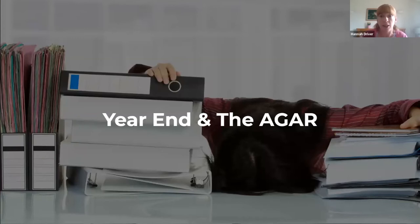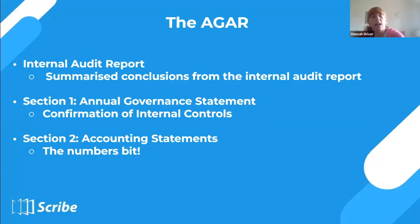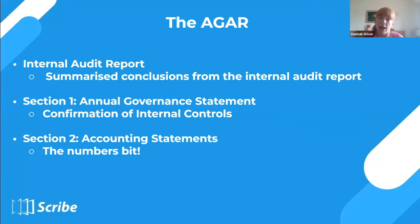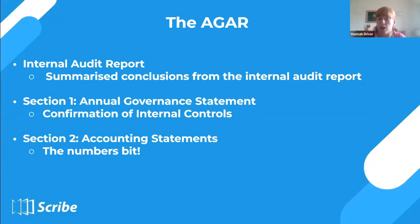Moving to year end: the AGAR has three sections — the internal audit report, the annual governance statement (Section 1), and the accounting statement (Section 2). Sections 1 and 2 summarise and confirm that you're using proper procedures and internal controls. Section 2, the accounting statement, is the numbers section — collating figures from your cash book into specific lines — which we'll focus on now.